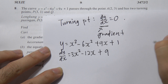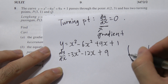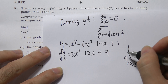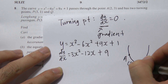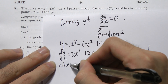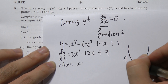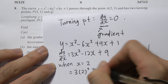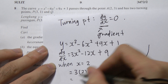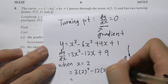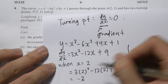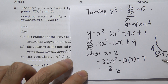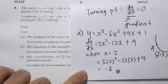The curve has many coordinates, so to find the gradient at point A(2,3), we substitute the x-value of A, which is x = 2, into dy/dx. So dy/dx = 3(2²) - 12(2) + 9 = 12 - 24 + 9 = -3. Therefore the gradient of the curve at A is -3.